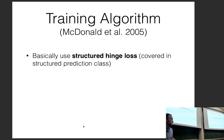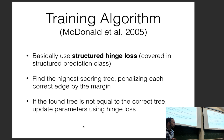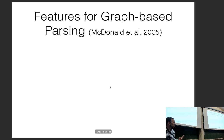These graph-based dependency parsers are often trained using the structured hinge loss or structured perceptron algorithm. Concretely: run the Chu-Liu/Edmonds algorithm to find the highest-scoring tree; if it differs from the correct tree, upweight the correct tree and downweight the predicted tree. This will be discussed in more detail next class.